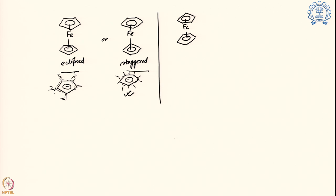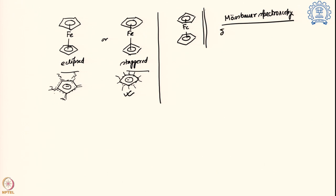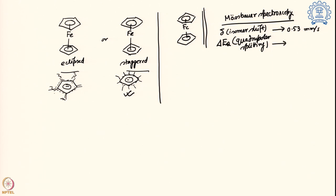Ferrocene was taken in the staggered form and the Mössbauer spectra were measured. When they ran the experiment, they found an isomer shift and also quadrupolar splitting. The isomer shift is around 0.53 millimeters per second, and the quadrupolar splitting is quite large at 2.39 millimeters per second.